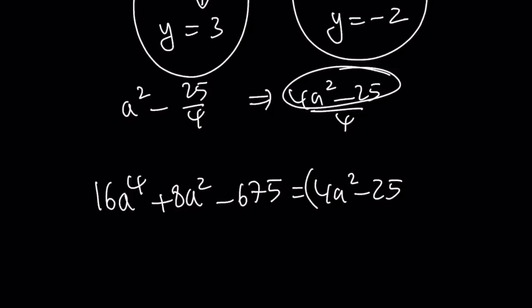And the other factor is not too hard to guess because we do know that it's going to have 4a squared. And we do have a 25. So we can go ahead and try to divide 675 by 25. That should be 27.